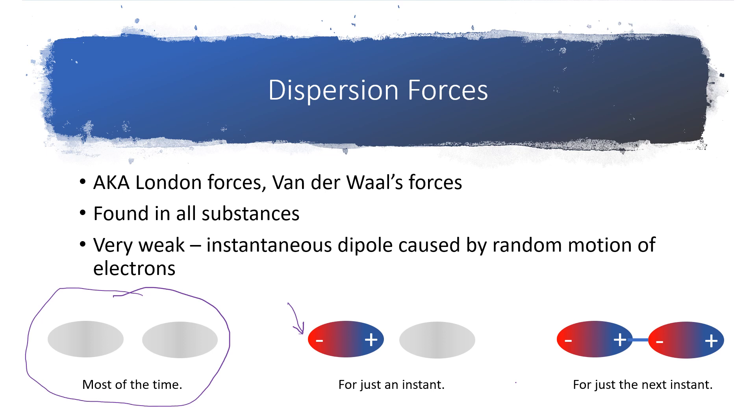But then in the next moment, the electrons go back to being randomly distributed, and that's how they are distributed most of the time. So this brief attraction is for just a very tiny fraction of the time. Most of the time, the electrons are nice and evenly distributed.